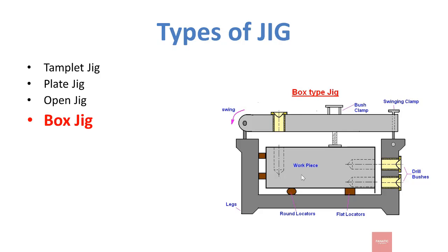Next we have box jig. In box jig, if we have a workpiece and we want to perform operations on multiple planes of that workpiece — for example, if we want to drill from the top plane and also from the front view — we will use box type jig. In this jig, we can perform drill operations from multiple planes.